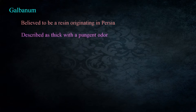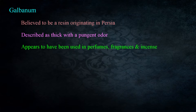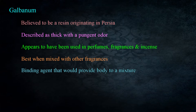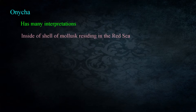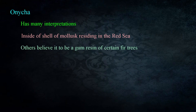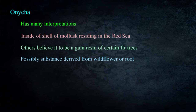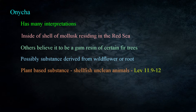Galbanum is believed to be a resin that originated in Persia, described as a thick resin with a strong pungent odor. It appears to have been used in making perfumes, fragrances, and incense, and is described as best when mixed with other fragrances, also serving as a binding agent to provide body for a mixture. Onycha is an element with a number of interpretations — some refer to an ingredient from inside the shell of a mollusk residing in the Red Sea, while others believe it refers to the gum resin of certain fir trees, and others interpret it as a substance derived from either a wildflower or root. The speaker's personal opinion is that this was a plant-based substance, since shellfish are defined under the law as unclean animals in Leviticus 11:9-12.